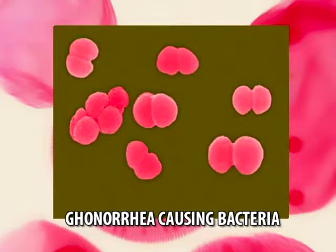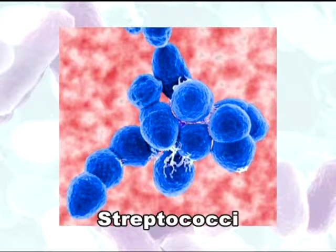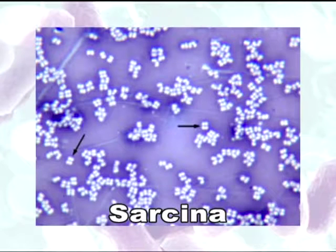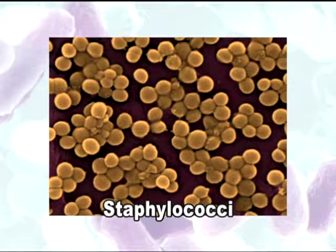Cocci can be diplococci when two spheres are present together, as seen in the bacteria that cause gonorrhea, and streptococci when present in chains, for example those involved in strep throat. The sarcina type is a cube-like packet of eight cocci, as seen in the case of Micrococcus luteus.